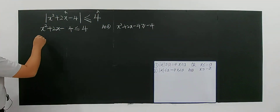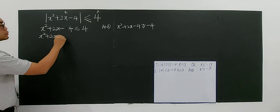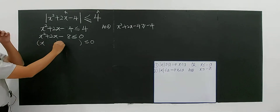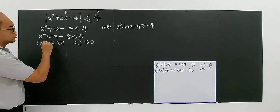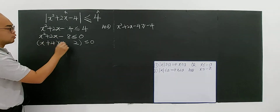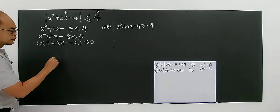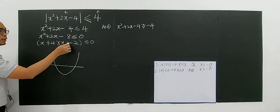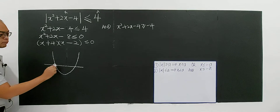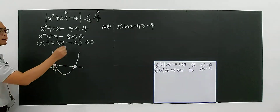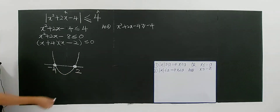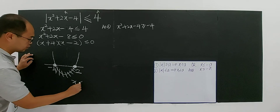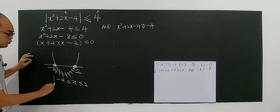As usual, solving the quadratic inequalities — for the first case, x squared plus 2x minus 8 less than or equal to 0. You factorize to get (x + 4)(x - 2). For quadratic inequalities, we use the graphical approach — draw a curve with roots at negative 4 and 2, with solid circles to show we include those values. Less than or equal to 0 means the curve below the x-axis, giving x between negative 4 and 2.